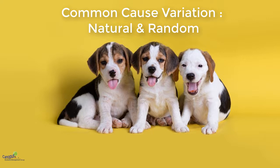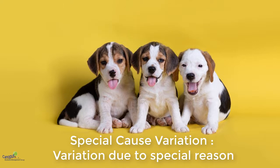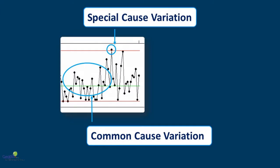Variations which are natural to a process and those which are random are called common cause variation. On the other hand, variations which occur due to a specific reason is called special cause variation. All processes which are in control will have common cause variation that is natural to it. But processes which are going out of control will not only have common cause variation but they will also have special cause variation.